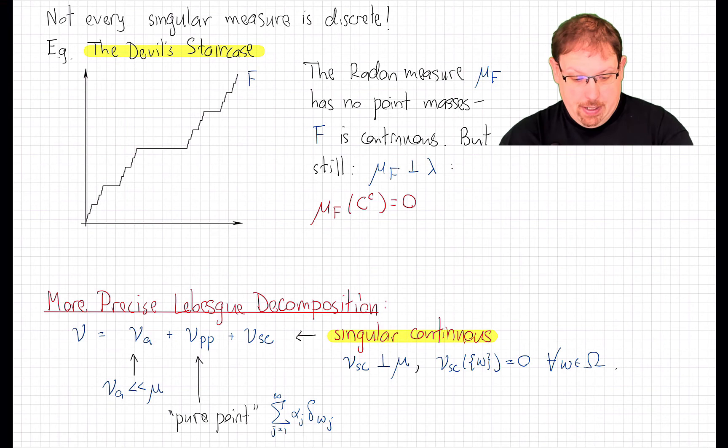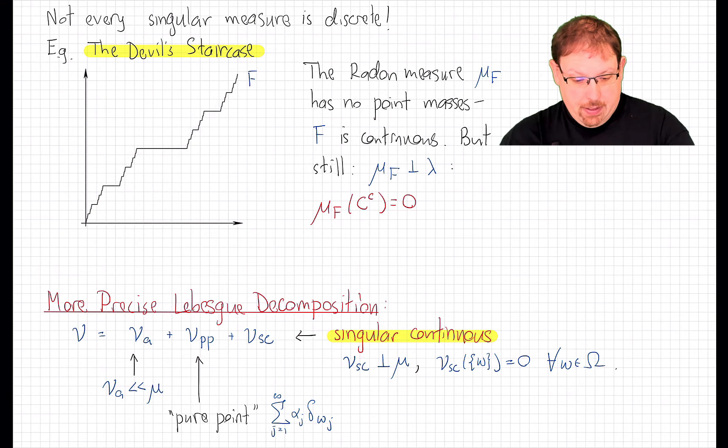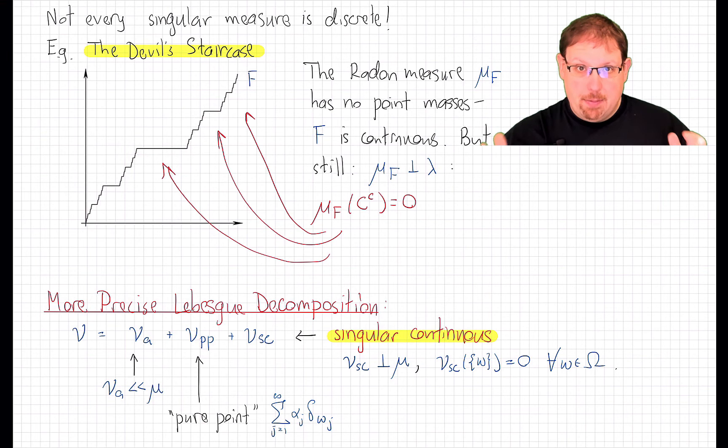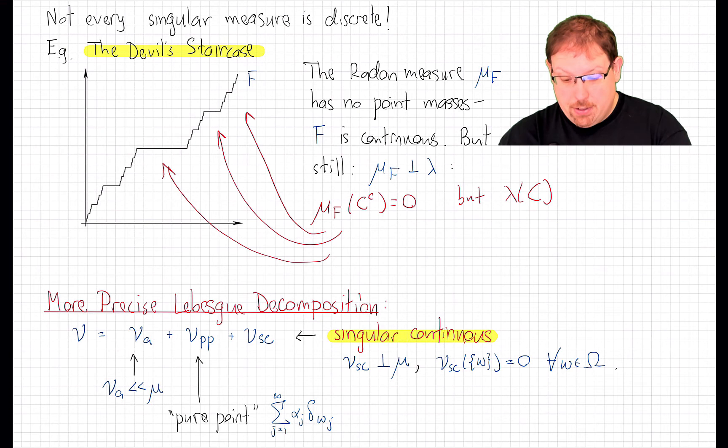Indeed, all of these flat parts are in the complement of the Cantor set. And so, using the definition of how the Radon measure mu f works, if we try to calculate the measure of any set that is contained in that complement, we're going to get f at b minus f at a summed up over some b's and a's that are each inside one of these intervals. And f at b minus f at a will therefore be zero in each case, because those are flat. On the other hand, we know that the Lebesgue measure of the Cantor set is zero. That was one of the first calculations we did with Lebesgue measure.